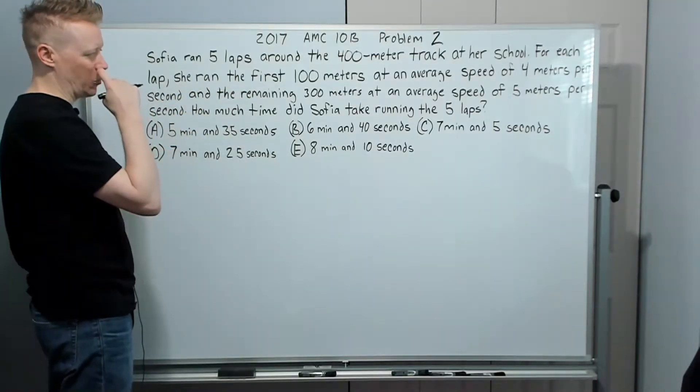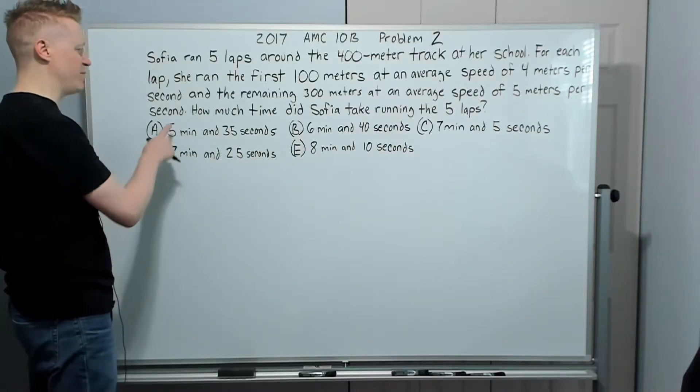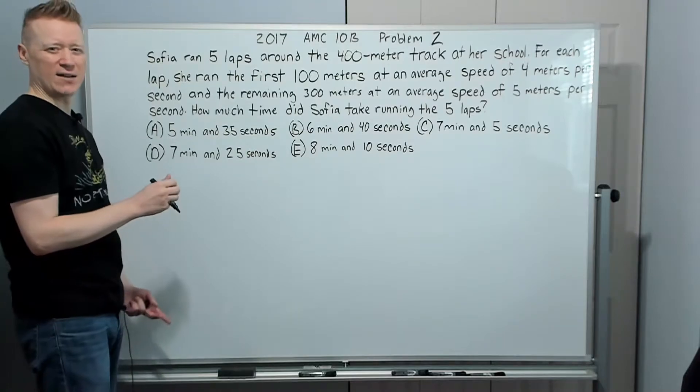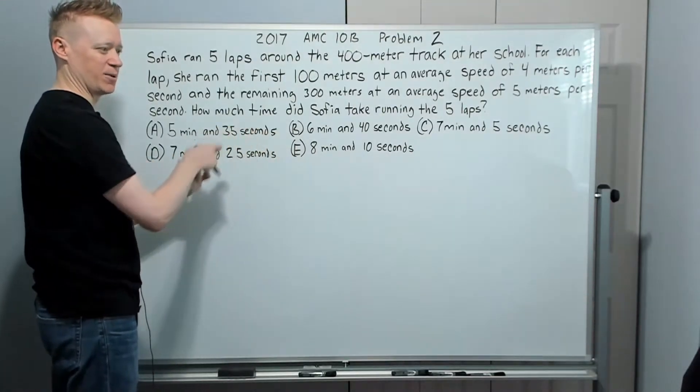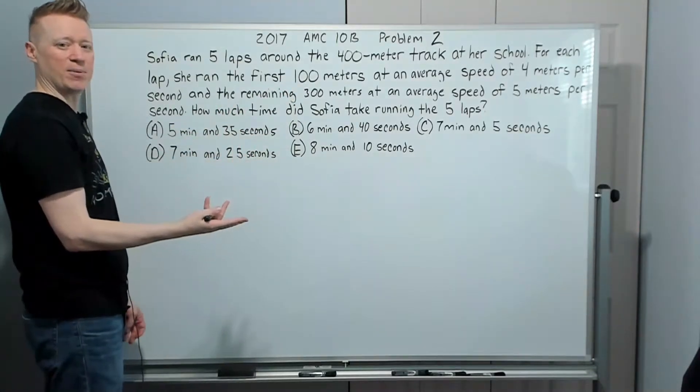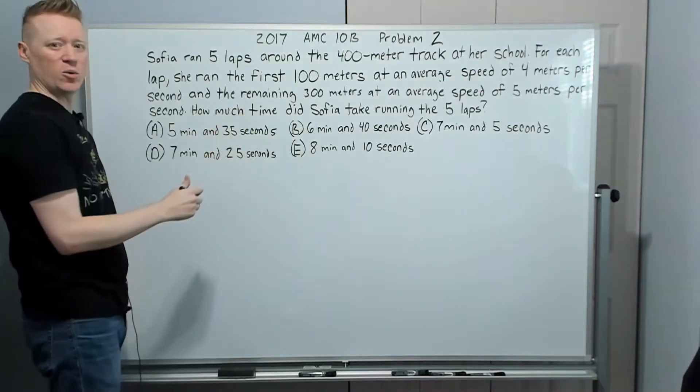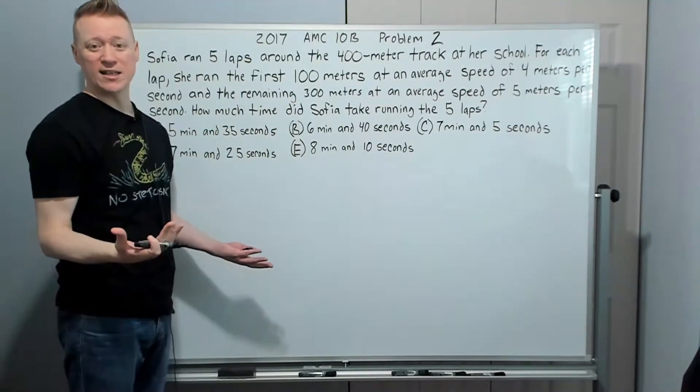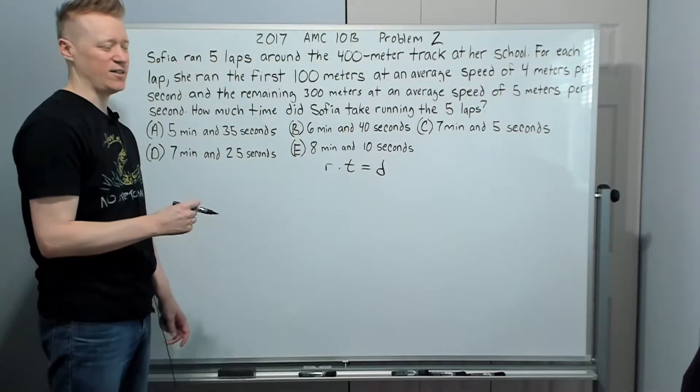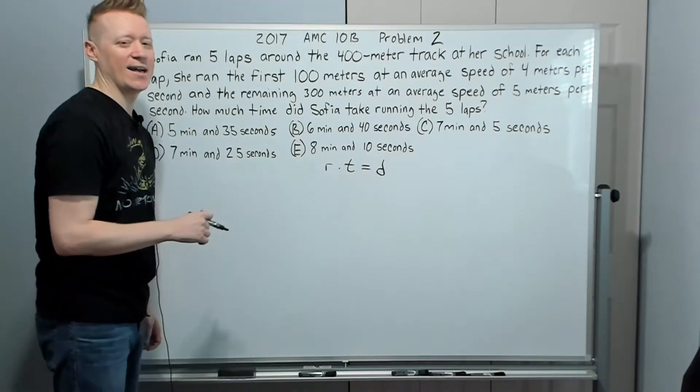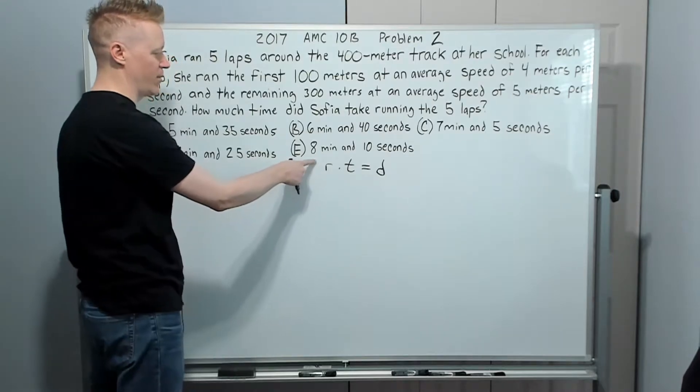Sophia ran five laps around the 400 meter track at her school. For each lap, she ran the first 100 meters at an average speed of four meters per second, and the remaining 300 meters at an average speed of five meters per second. How much time did Sophia take running the five laps? I think for me, we don't need to split it between do that part of this lap, second part, part of this one, second part. Let's just do all the first 100 meters of each lap. What overarching concept are we looking at here? We're looking at rate times time equals distance. I hope that you are comfortable with that topic. It's an absolute staple on the test.